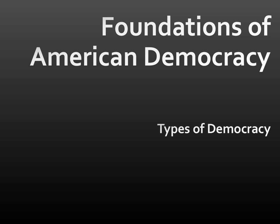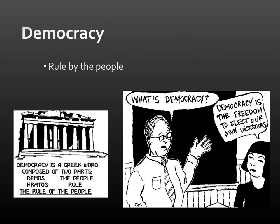Welcome back. Types of Democracy. Let's start by defining democracy. What is democracy? Very simply, it is rule by the people. So again, that's our third term that has this same idea: social contract, popular sovereignty, and now democracy. So rule by the people.